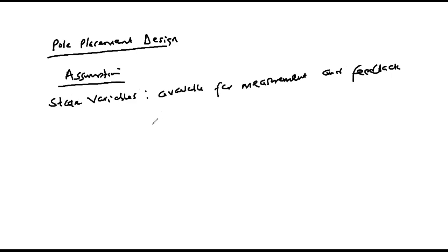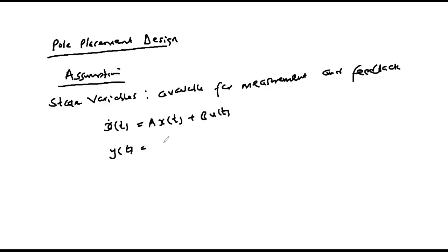That means we can measure all the state variables of the system and feed them back into our given system as a feedback control system. We make use of the state model equations: x-dot(t) = Ax(t) + Bu(t), and y(t) = Cx(t).